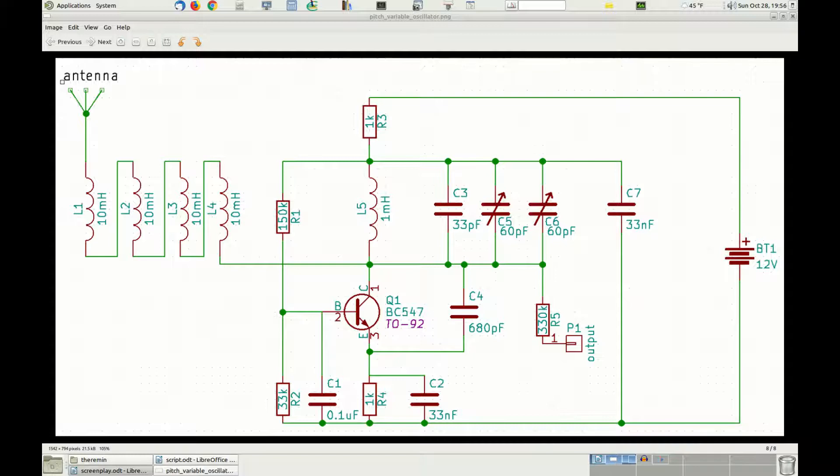Like the reference oscillator, the pitch variable oscillator is based on the principle of the tuned amplifier oscillator. Here, the resonator tank is provided by the inductor L5, the capacitors C3, C5 and C6, and by the antenna attached to the resonator through the additional inductors L1 through L4.